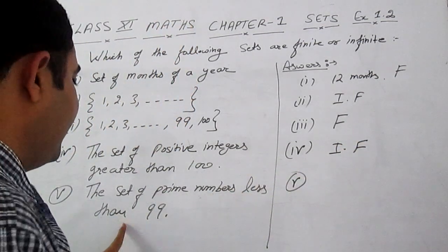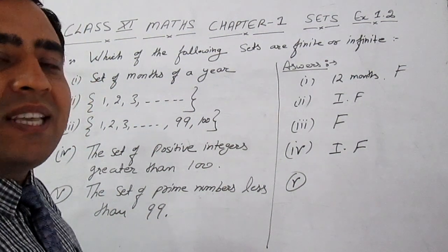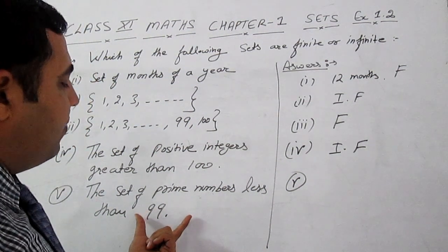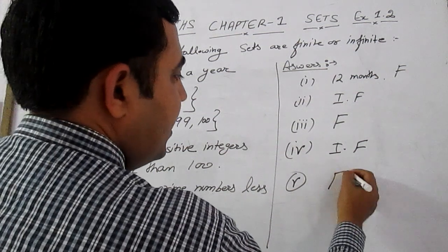We can count prime numbers less than 99. These are finite in number; therefore, it is a finite set.